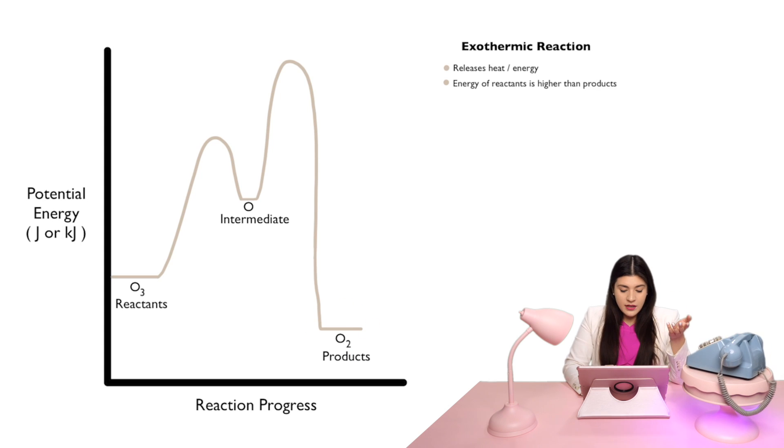If this were the opposite, if our products were up here and they were higher than our reactants which are down here, then that would have been an endothermic reaction. So that's something to definitely understand the differences. And that's one way that you can just instantly tell, is this exothermic or is this endothermic, is by looking at the energy levels of our reactants and our products.